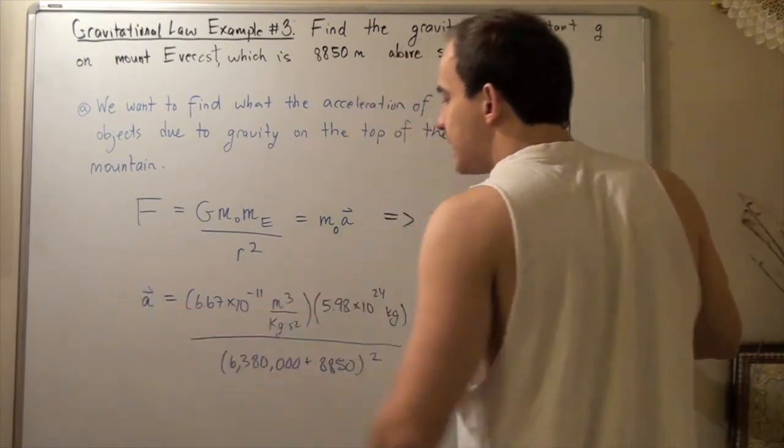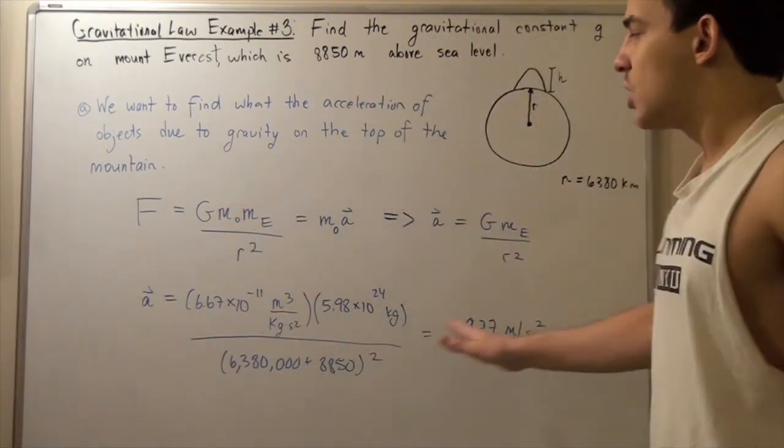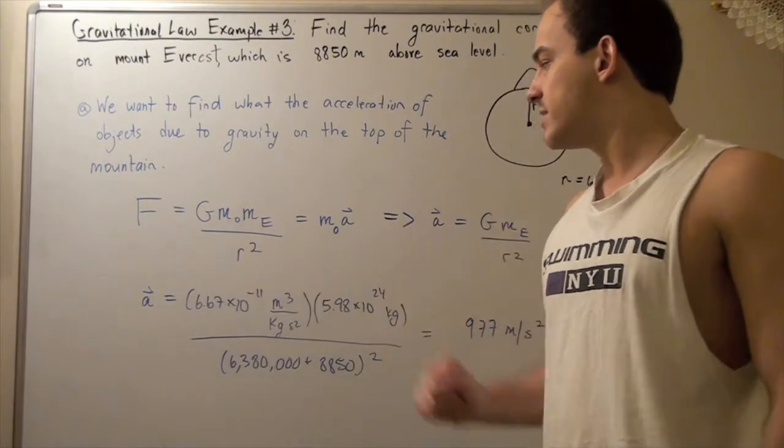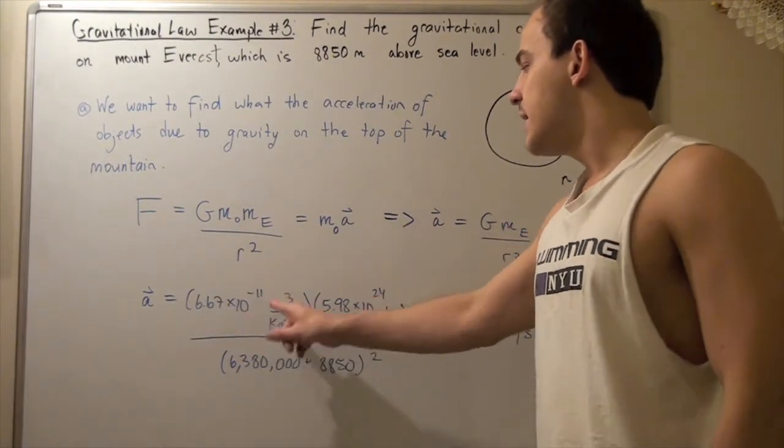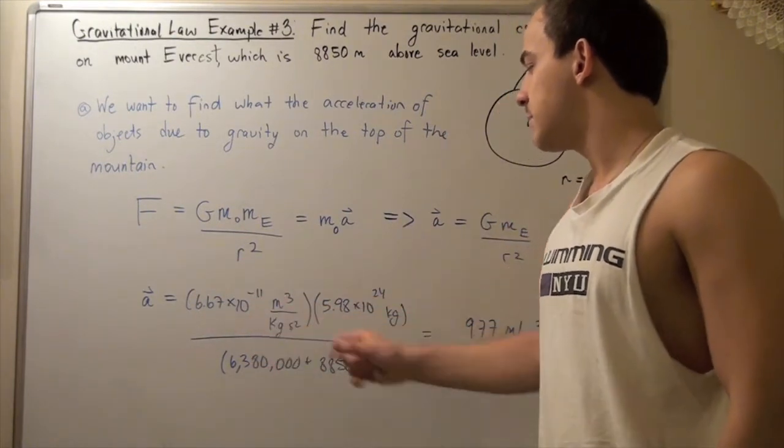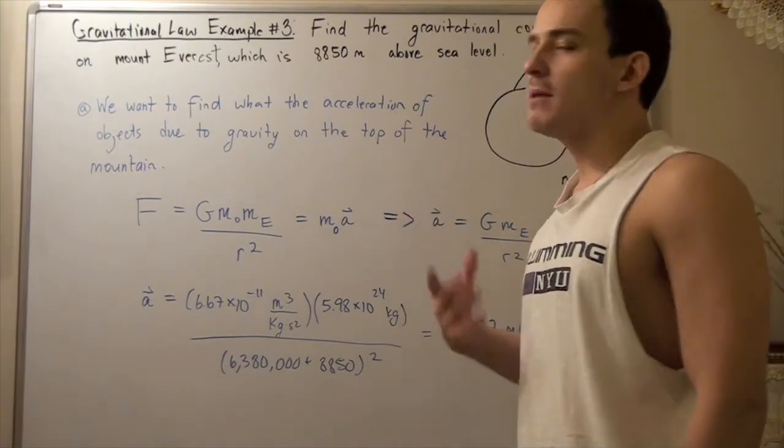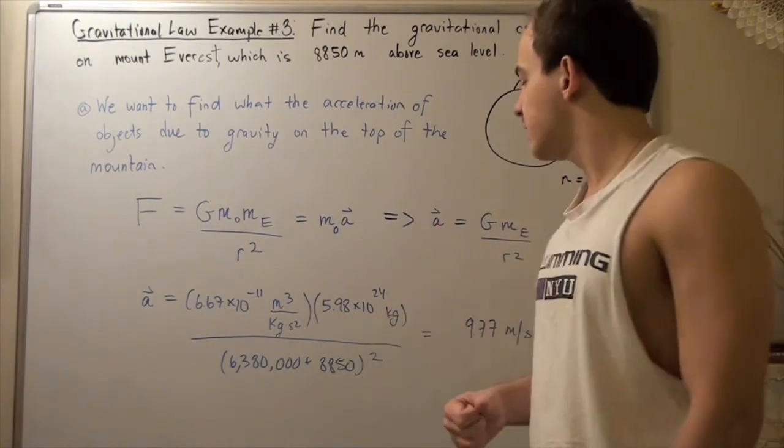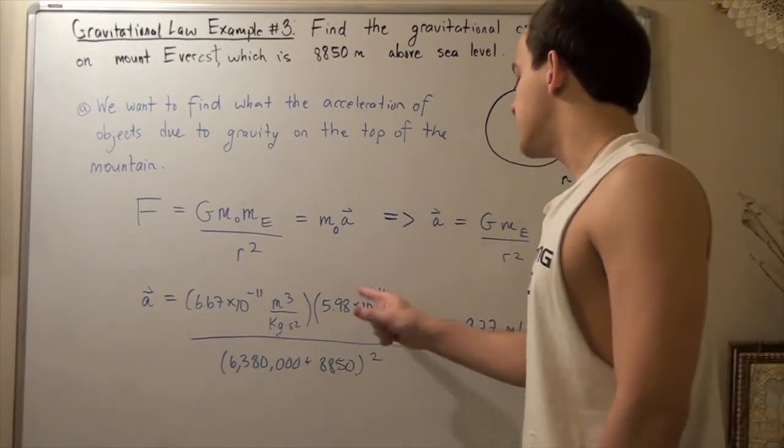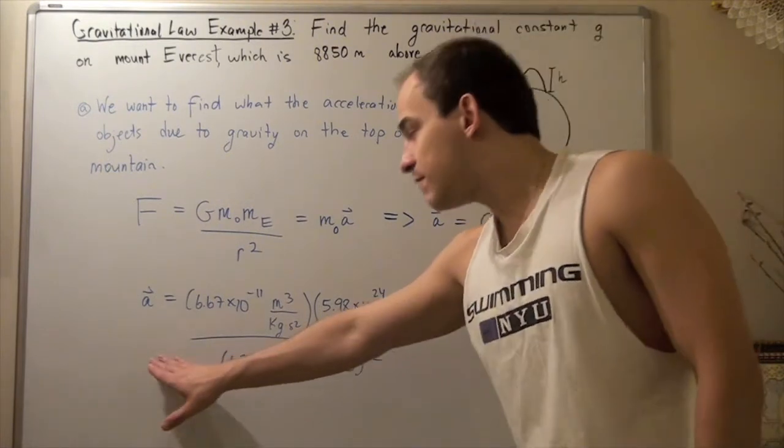To find my acceleration, I simply plug in my values. My G constant is 6.67 times 10 to negative 11 meters cubed divided by kilograms times seconds squared, multiplied by the mass of the Earth, which you can look up online, 5.98 times 10 to 24 kilograms.